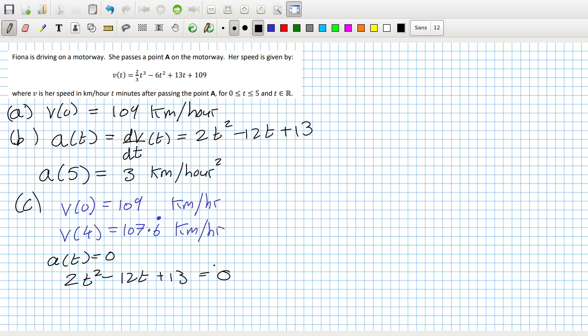The derivative has to equal 0, which means dV/dt has to equal 0, which means 2t² - 12t + 13 has to equal 0. Can we factorise that, I wonder, or do we need to use the minus b formula? I think we have to use the minus b formula.